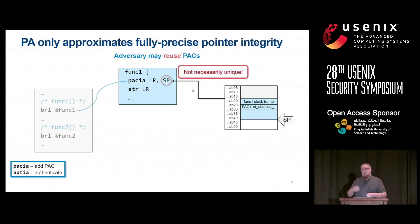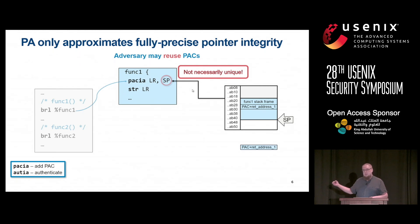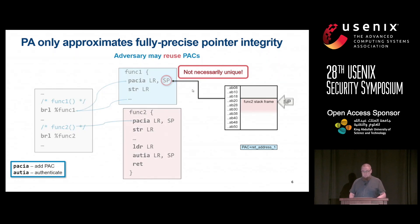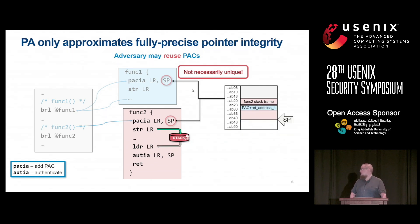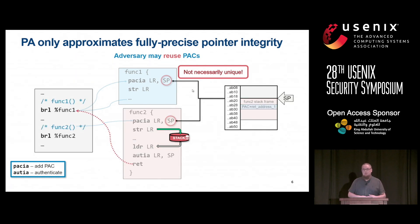The attacker could read out the signed return address from the stack frame for later use, then allow the function to continue execution. When we get into function two, a new signed return address is generated for that function call and placed on the stack frame. But because the stack pointer values are the same, the attacker can take the previously stored value and put it back on the stack. Because the modifiers happen to be exactly the same, this will authenticate normally and allow the return to go to an incorrect location.